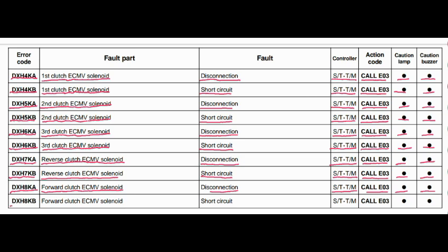Error code DXH8KB. The faulty part is the forward clutch ECMV solenoid. The fault is a short circuit. The steering and transmission controller is related to this fault. Action code is E03, caution lamp will blink, and caution buzzer will beep.